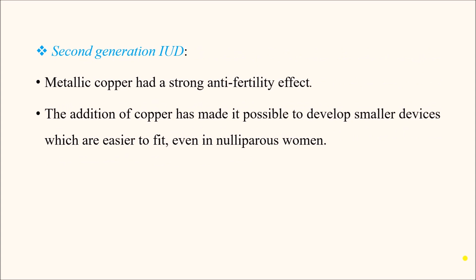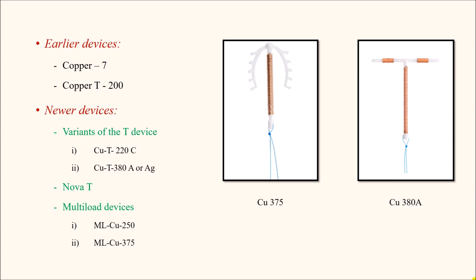Second generation IUDs release the metallic copper ion, which has a strong anti-fertility effect. The addition of copper has made it possible to develop smaller devices, which are easier to fit even in nulliparous women. Earlier devices include Copper 7 and Copper T200, whereas newer devices include various variants of the T devices like Copper T220C and Copper T380A — the 'A' standing for argentan, the Latin name for silver. In Copper T380A, there is a silver wire around which the copper coil exists. There are also Novagard and multiload devices like Cu-250 and Cu-375.